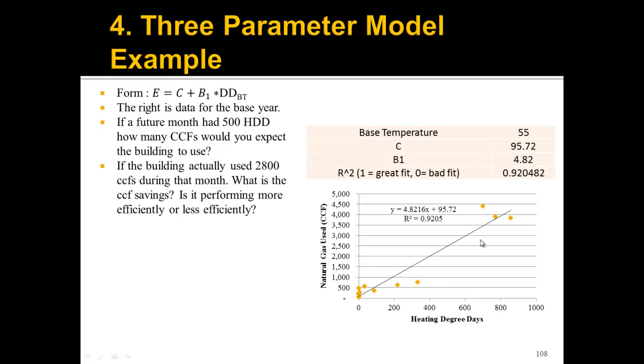Let's go to a little example. Let's say this is our base year, our adjusted baseline model for our base year. If a future month had 500 heating degree days, how many CCFs would you expect for the building to use? What this is saying is, this is our model. X, in this case, is 500. We want to calculate what Y would be. X is 500. We take our 4.82 and our 95.72. We had 2,505.72 CCF of natural gas. That's our adjusted baseline.